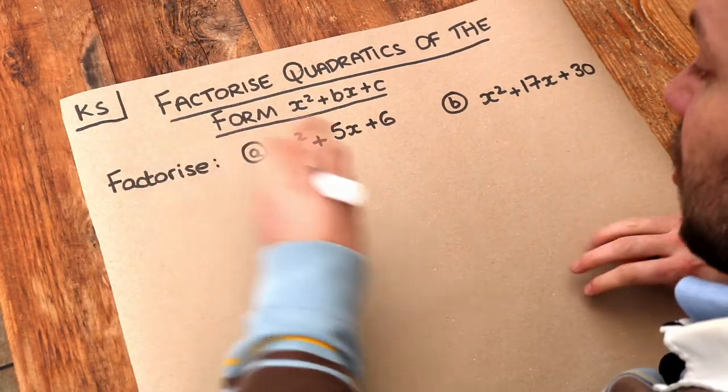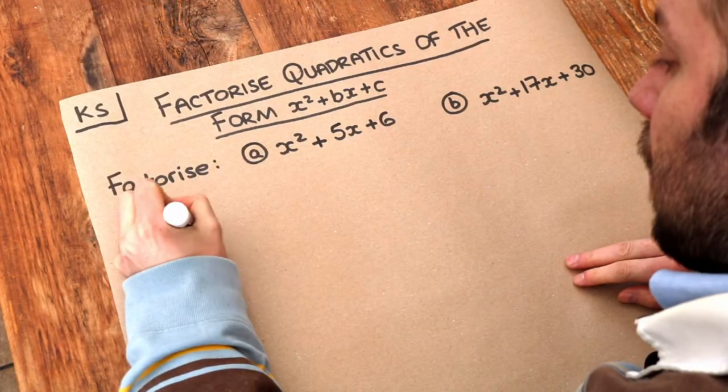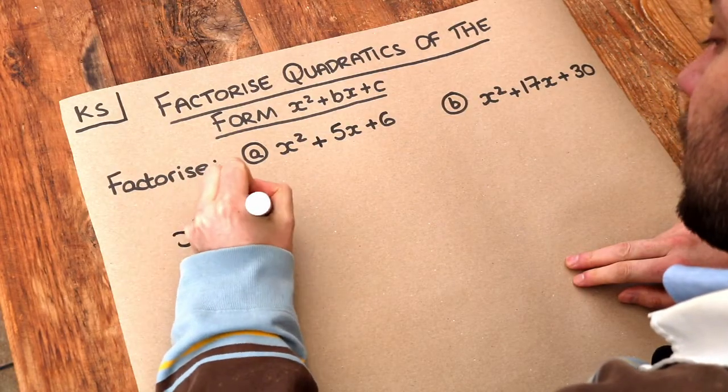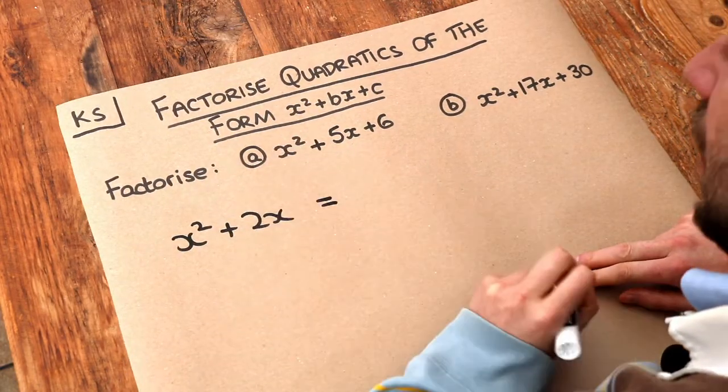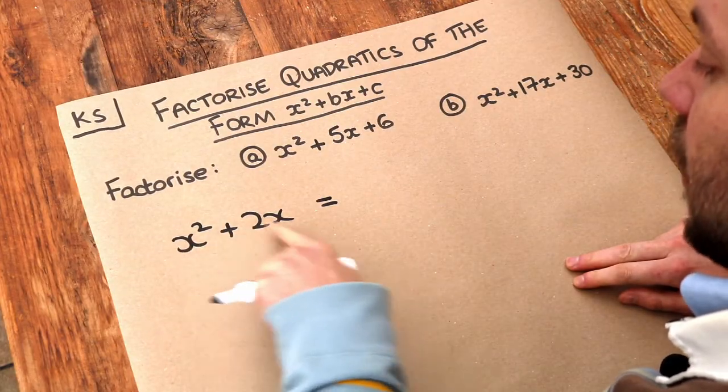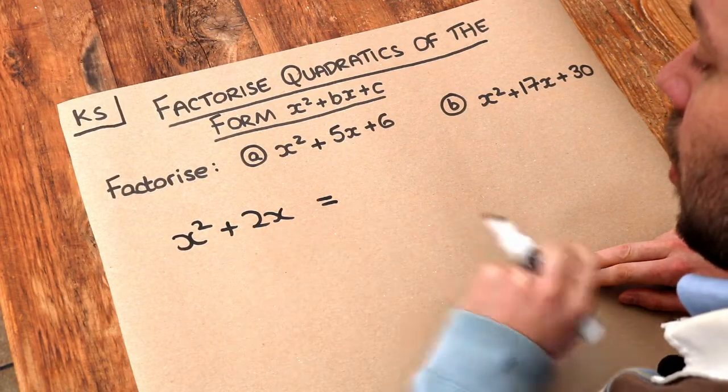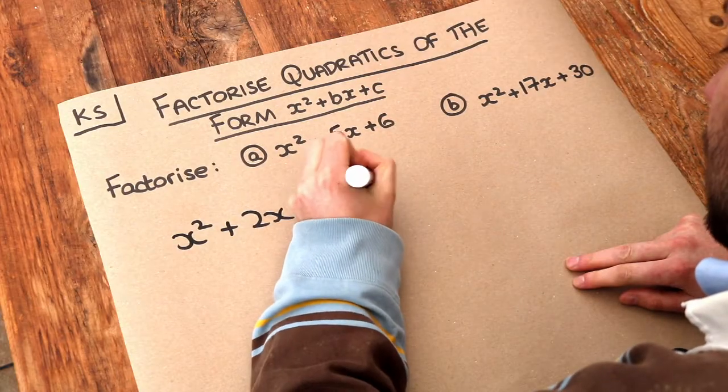Now we know how to factorise expressions if we had a common factor. So if we had for example x squared plus 2x, that's relatively easy because we just look for a common factor here and here. What do they both have in common? Well they both have x in common. So you'd factor out the x.